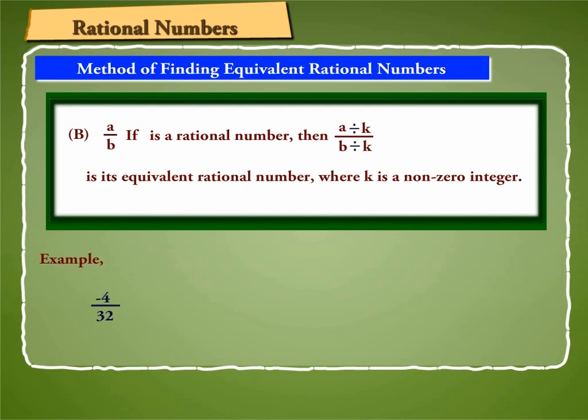Example, minus 4 by 32 is equal to minus 4 divided by 2 by 32 divided by 2, is equal to minus 4 divided by minus 4 by 32 divided by minus 4, is equal to 1 by minus 8, is equal to minus 1 by 8.